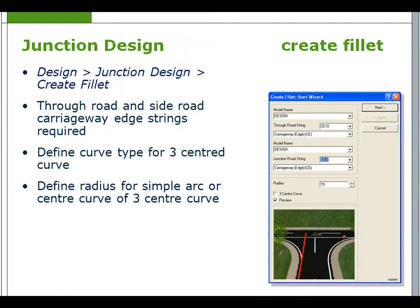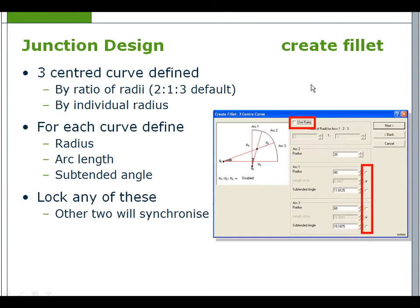Junction design uses a simple graphic-based wizard to create junction fillets. We can also regrade fillets by adjusting levels to improve drainage if required. Traffic islands can be created if required, and also tidying the junction strings. From the junction design toolbar, select create fillet. The through road and side road carriageway edge strings are required, and also a curved type.